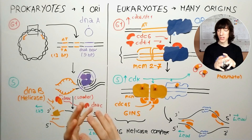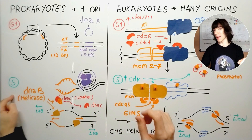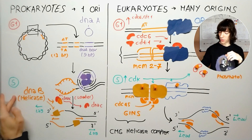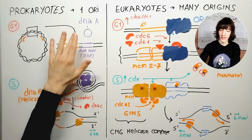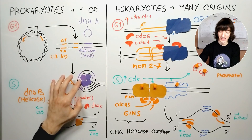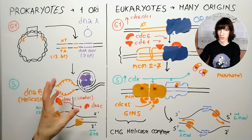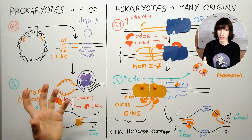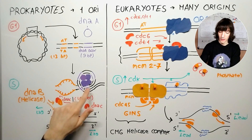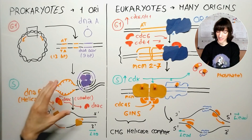Eventually, the cell will be ready to replicate its DNA, and that's when it will enter the S phase — G1 for growth, S for synthesis. At that point, the DnaA proteins will become active by binding to ATP and through other regulatory systems we will not discuss in this video. When they do, they will bind to the DNA, and something really cool will happen.